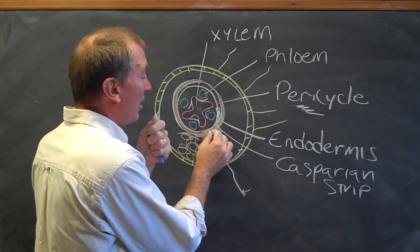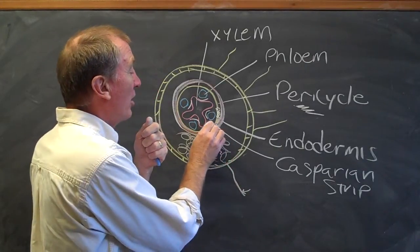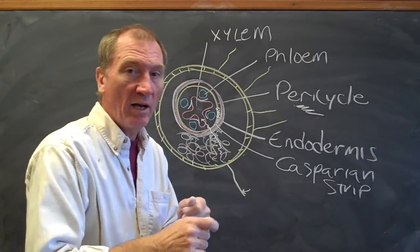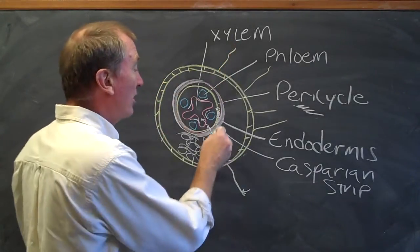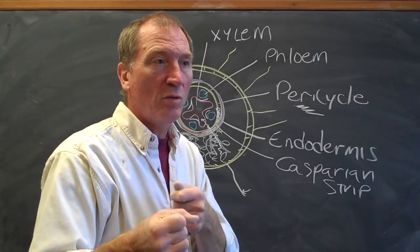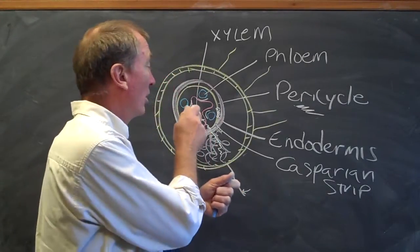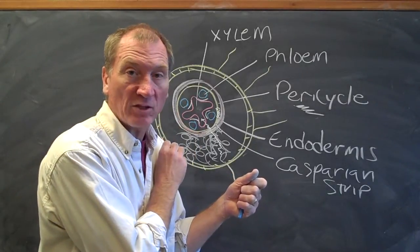So the water has to move into the cell to cross the Casparian strip in order to move into the xylem and then move up the plant. So this Casparian strip allows the cells in the endodermis to be gatekeepers for water moving into the xylem part of the vascular system.